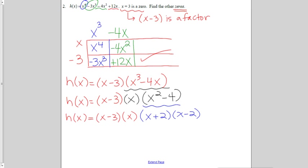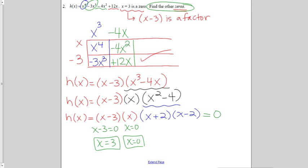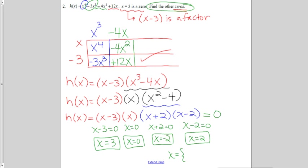But the original question didn't say to factor it — it said to find the zeros. The zeros mean I now have to set this equal to 0. When does x minus 3 equal 0? That's when x equals 3. When does x equal 0? That's just x equals 0. When does x plus 2 equal 0? That's when x equals negative 2. And when does x minus 2 equal 0? That's when x equals positive 2. The original problem was an x to the 4th function, which means I should have four zeros, and I do have four zeros. In set notation from smallest to greatest, they would be written as negative 2, 0, positive 2, then 3.